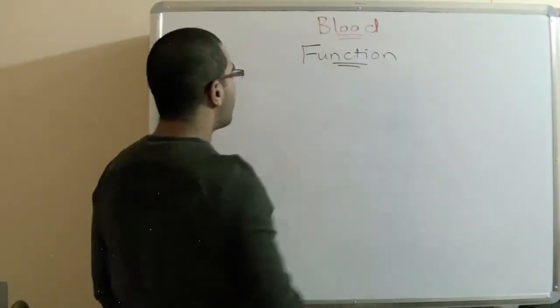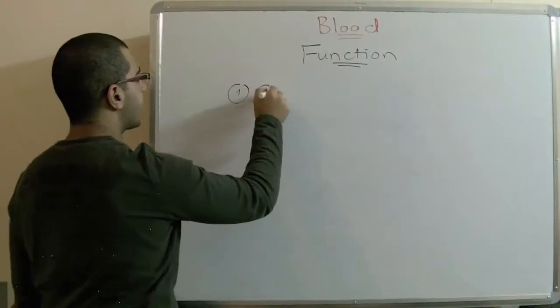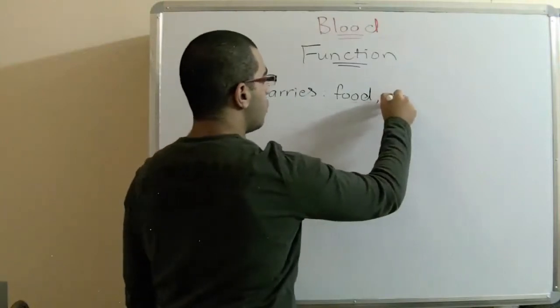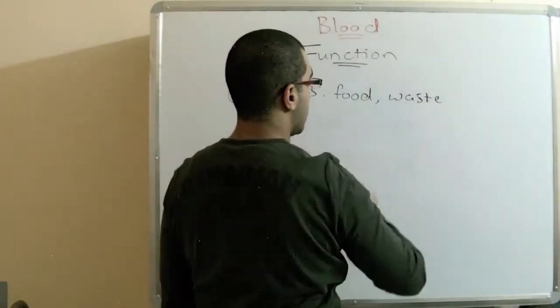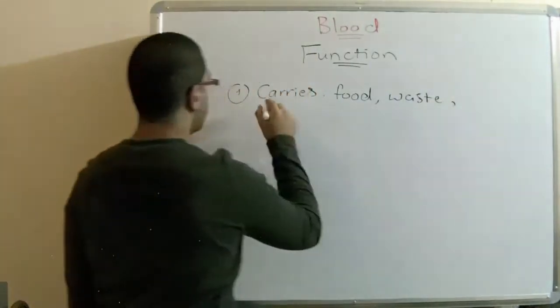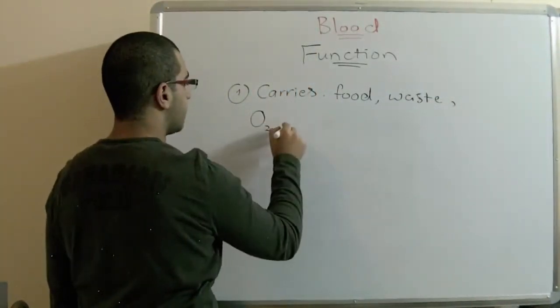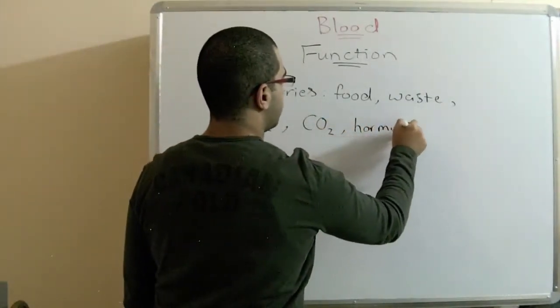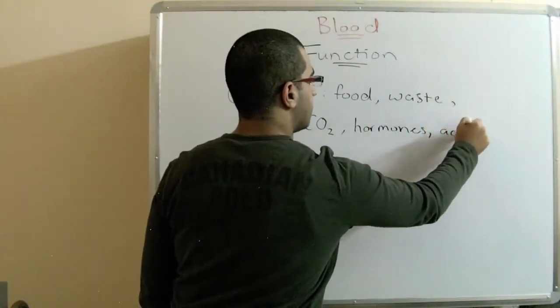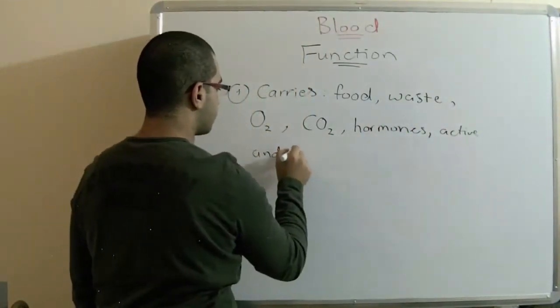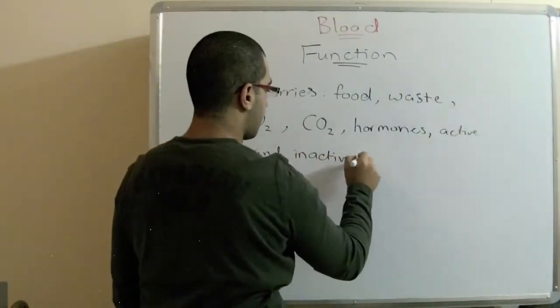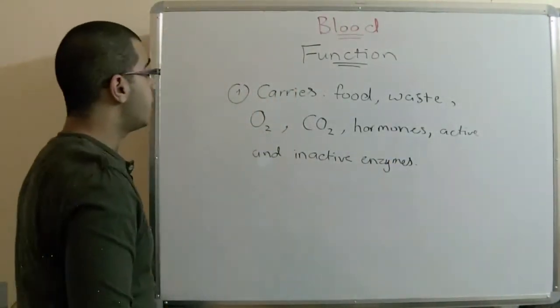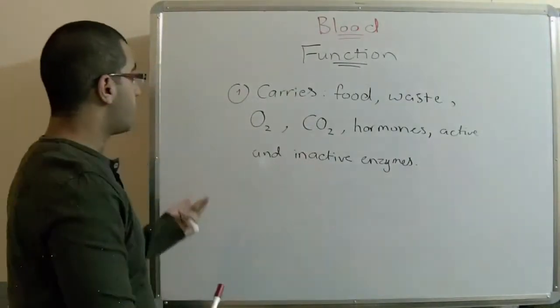The blood is very important as it carries food substances, waste substances such as urea, it carries oxygen, carbon dioxide, hormones, active and inactive enzymes. So the blood carries all this stuff. It's very important. This is the first function of the blood.